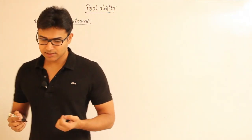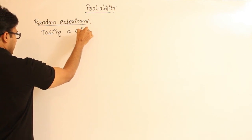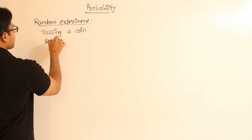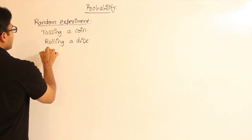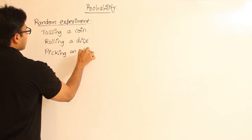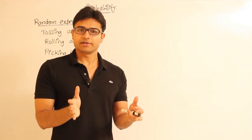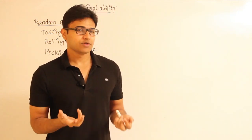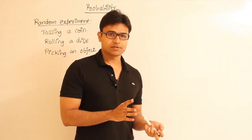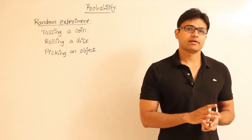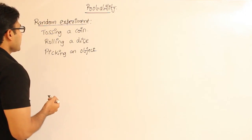For example, tossing a coin is a random experiment. Similarly, rolling a dice is a random experiment. You can also think about picking an object from a collection without looking — if we have a basket with 10 red balls and 10 white balls and you pick one without looking, we don't know which ball you'll get. We know the set of outcomes but not exactly which one — that is a random experiment.